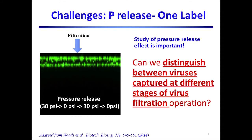The virus capture profiles are very different for a membrane used in an experiment with a process disruption. In this case, the labeled phage were filtered through the membrane at a constant pressure. The pressure was then released for several minutes and the system was repressurized and filtration continued. The confocal image obtained after the filtration showed two separate green bands near the entrance of the DV20 filter. However, the origin of these multiple bands is unclear since it is impossible to determine which virus entered the filter before and after the pressure release.